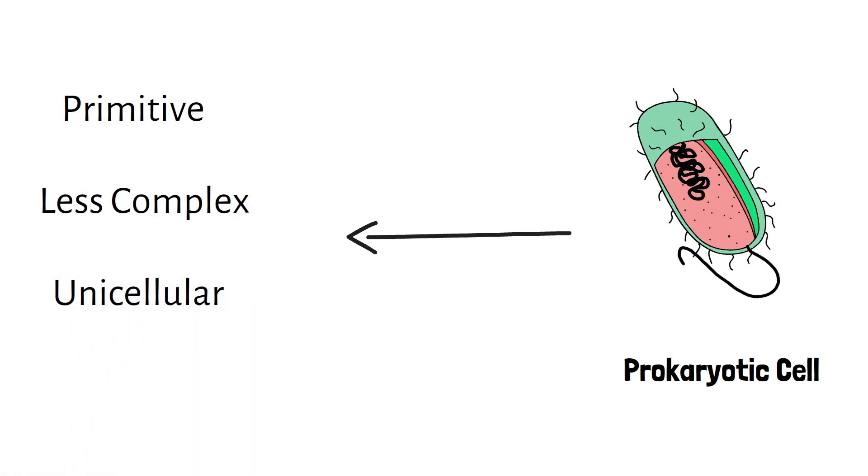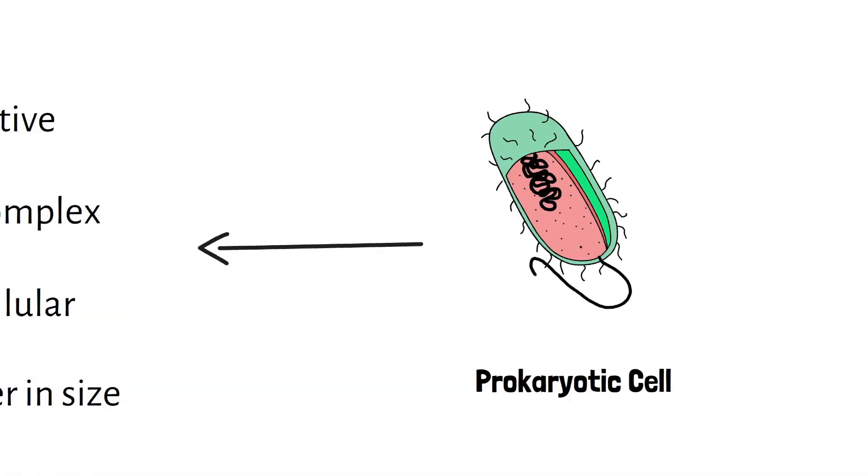Prokaryotes are unicellular organisms, while eukaryotes are usually multicellular. Prokaryotic cell is smaller in size compared to the eukaryotic cell.